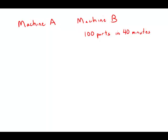Machine A produces 100 parts twice as fast as machine B does. Machine B produces 100 parts in 40 minutes. If each machine produces parts at a constant rate, how many parts does machine A produce in six minutes?